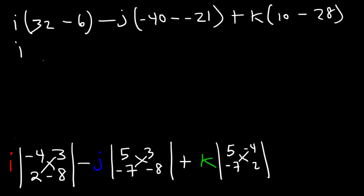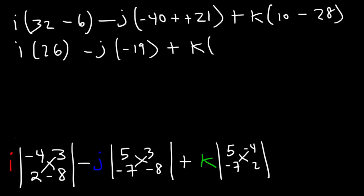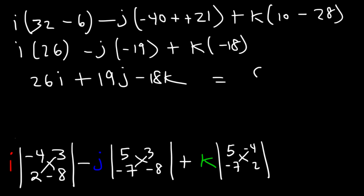So 32 minus 6 is 26. For j: negative 40 plus 21 is negative 19, and with the minus sign in front it becomes plus 19j. And 10 minus 28 is negative 18. So the result is 26i plus 19j minus 18k. That's the new vector — that's how you find the cross product.